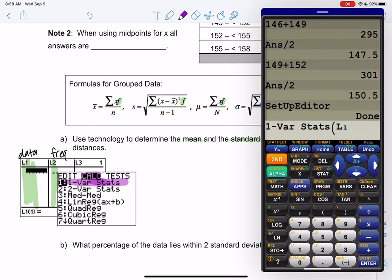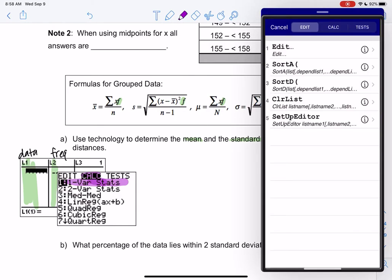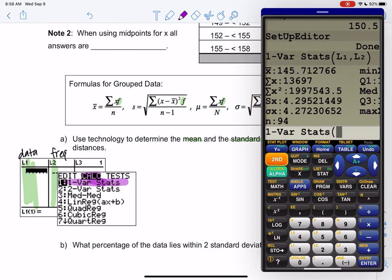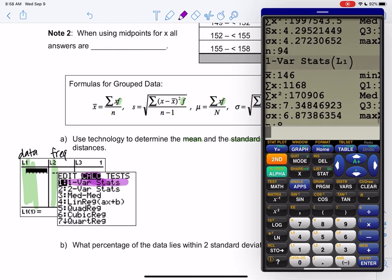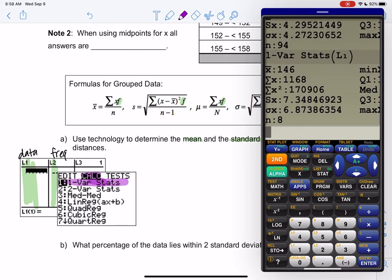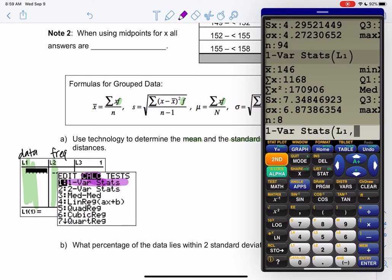Back to stat, we're going to go to calc, one var stat, and before we've been typing L1, now we need to tell it to also look at L2. So you're going to do comma L2. If you have the calculator that asks for the data and frequency, you just add L2 into the row that says frequency. You'll notice if I don't type that, if I just do L1, you'll see I'm getting different numbers. And that's because the calculator isn't looking at the frequencies if I don't tell it to. So without telling it to look at that, it is wrong. So we need to make sure it looks at L1 comma L2.